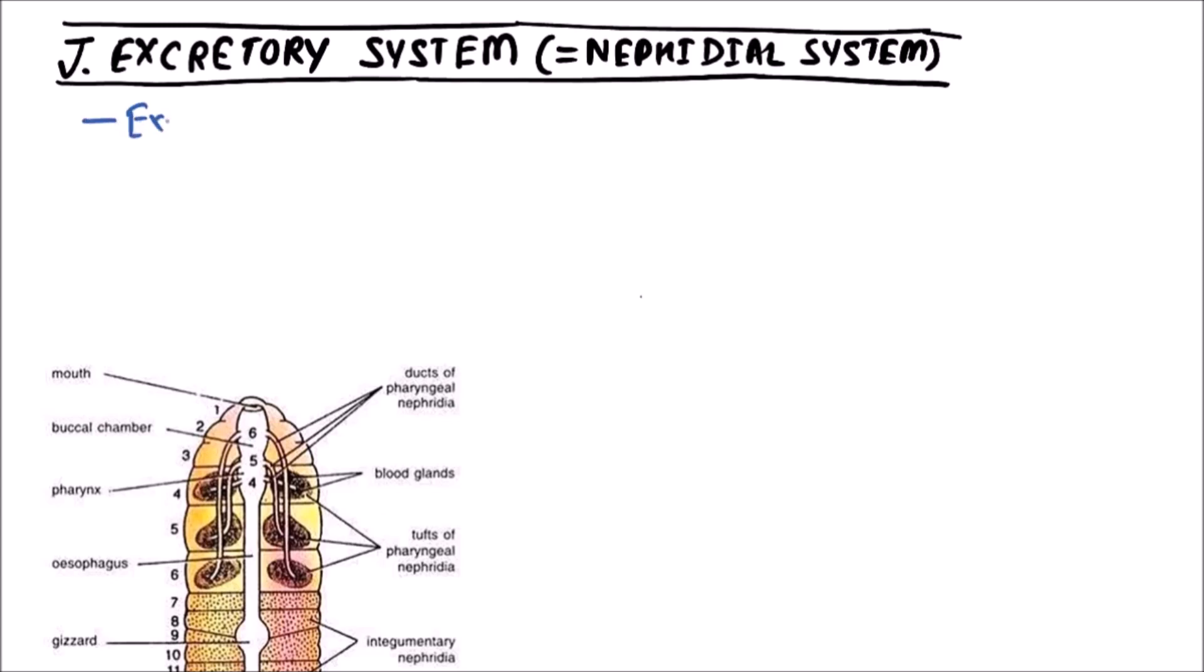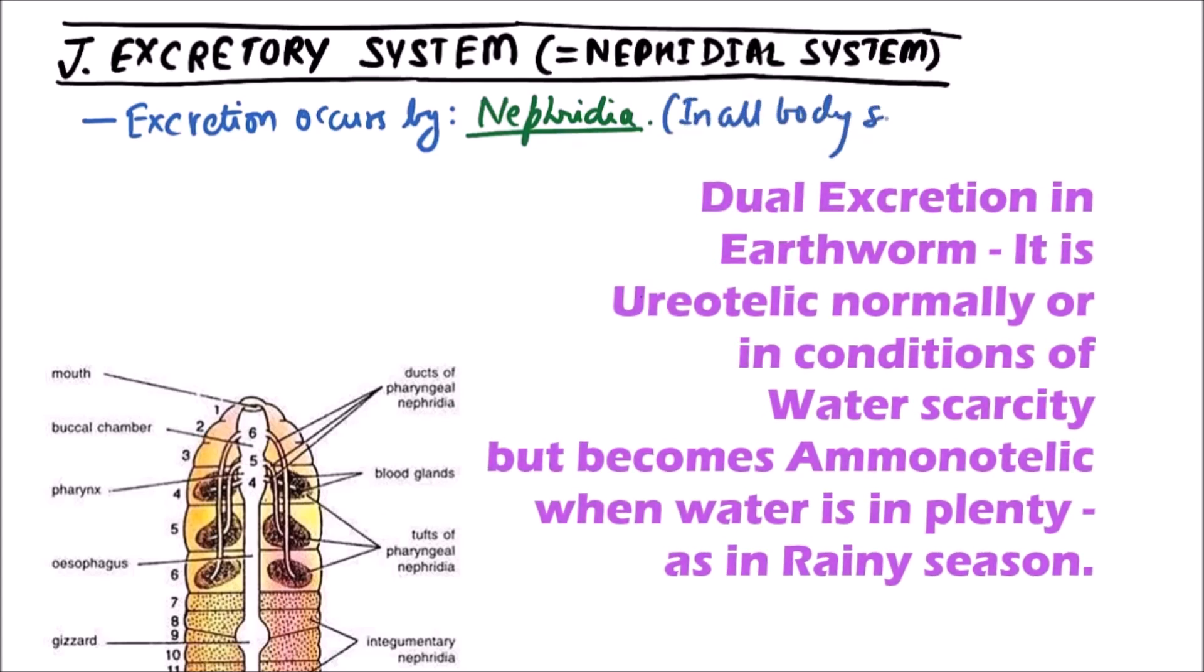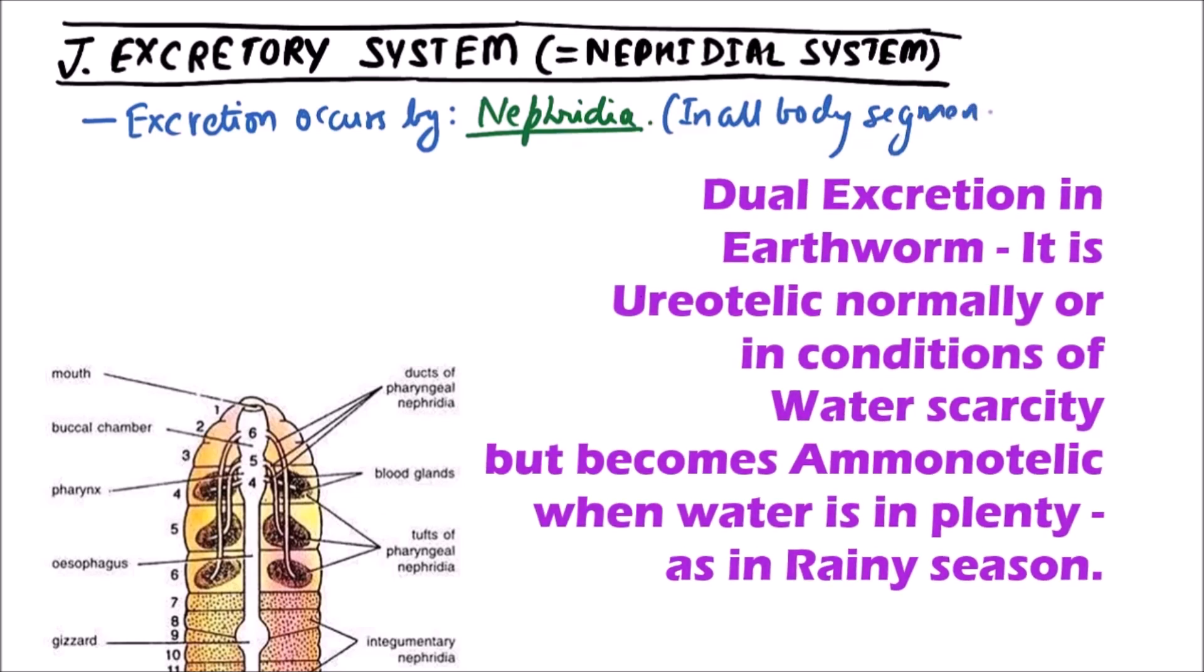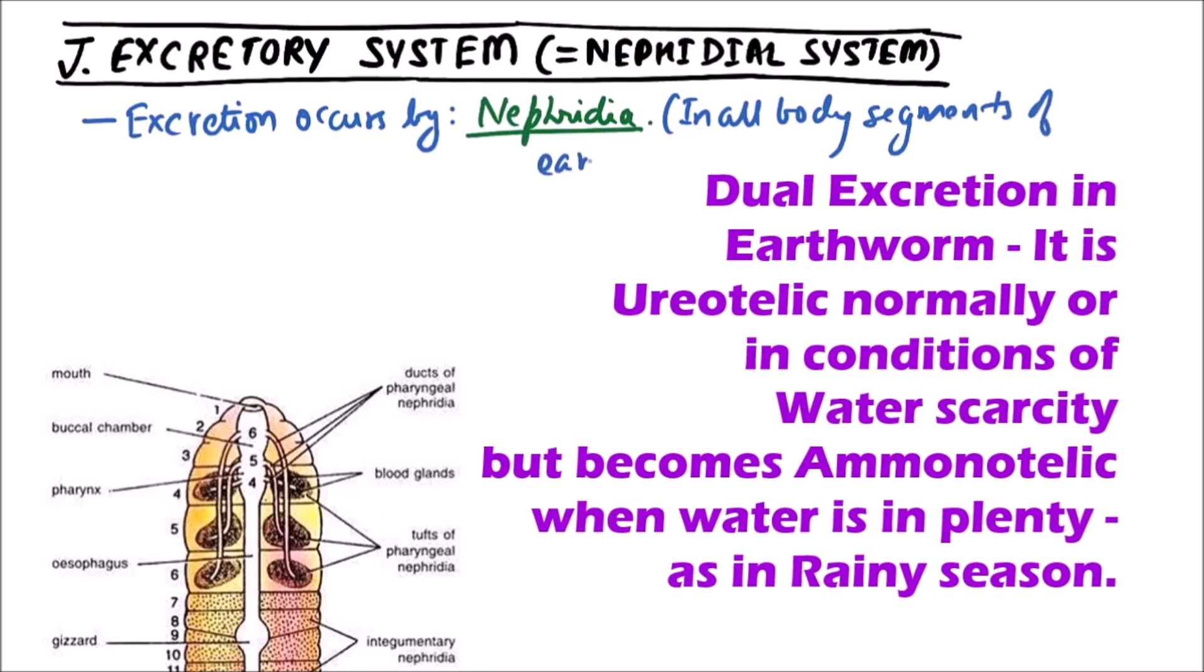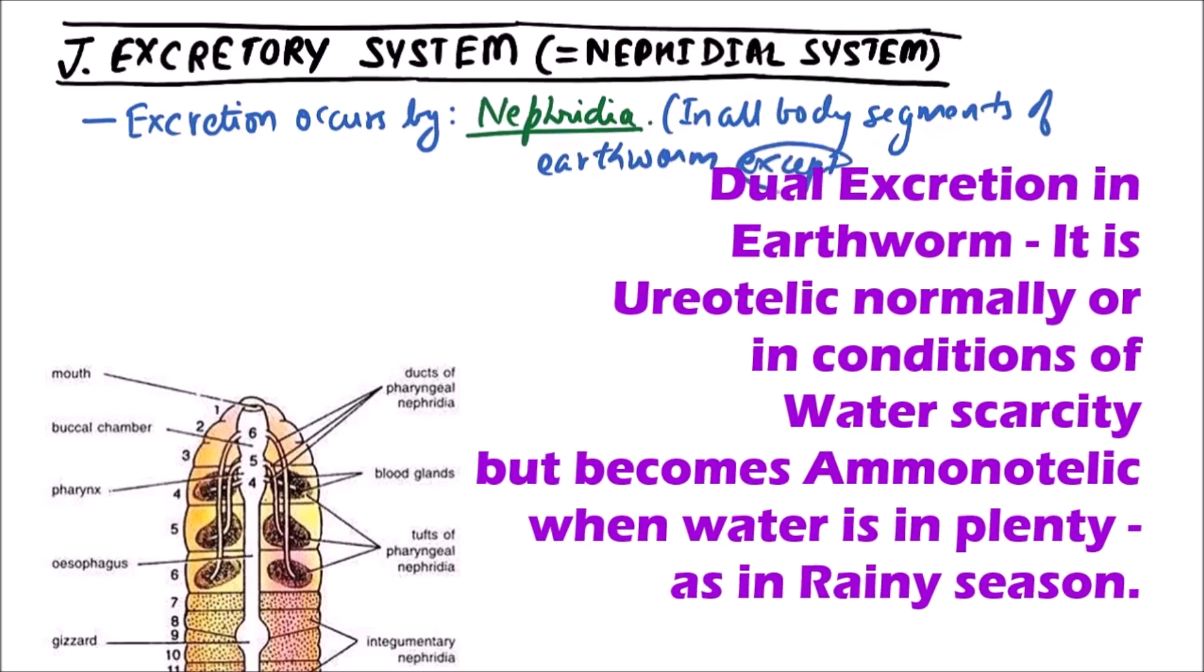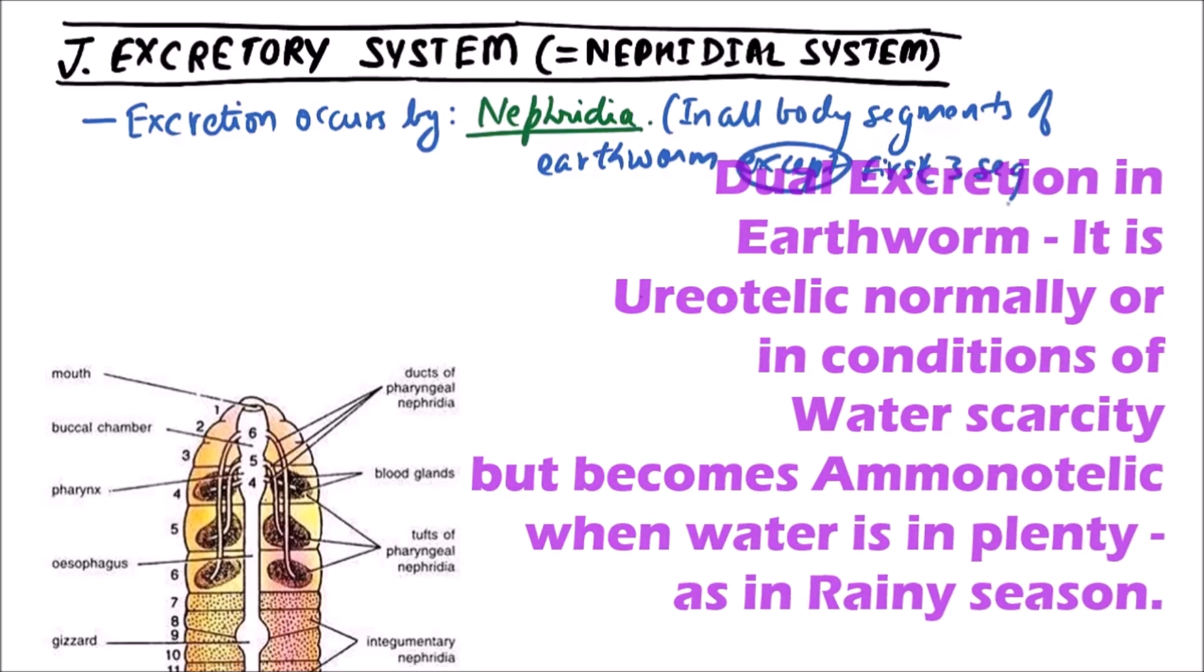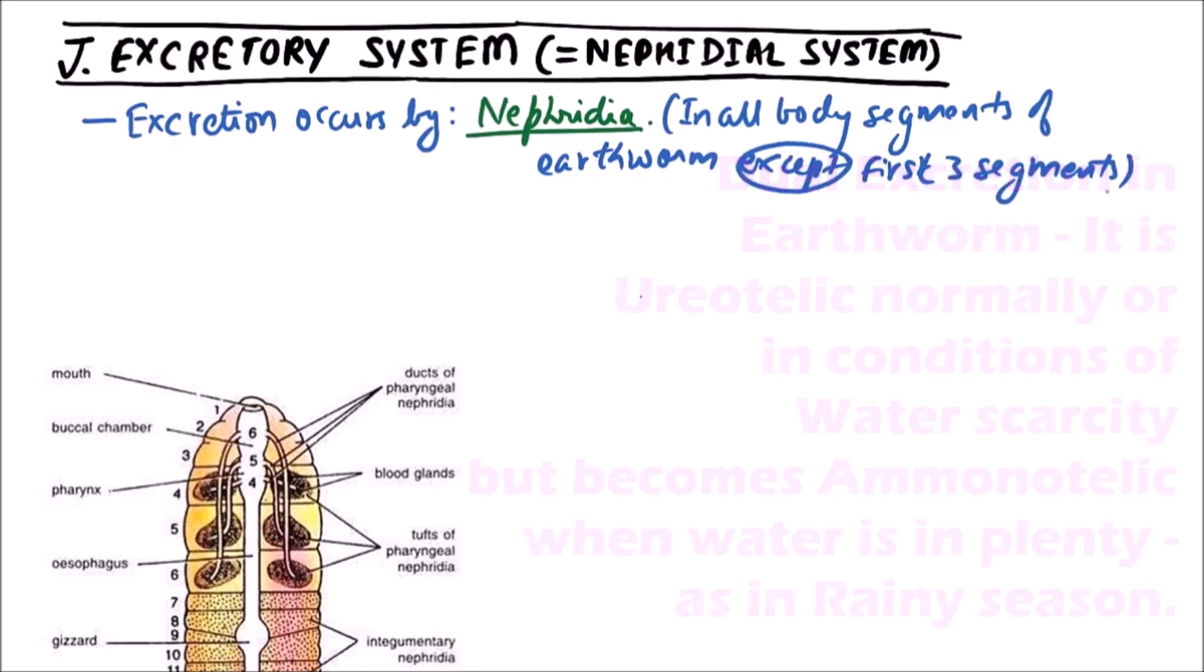In earthworm, excretion occurs by nephridia. Nephridia are found in all body segments of earthworm except first three segments of body.